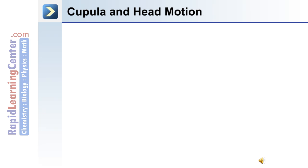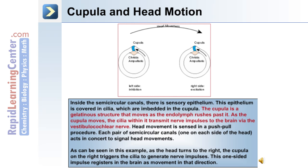Inside the semicircular canals there is sensory epithelium covered in cilia, which are embedded in the cupula. The cupula is a gelatinous structure that moves as endolymph rushes past it. As the cupula moves, the cilia within it transmit nerve impulses to the brain via the vestibulocochlear nerve. Head movement is sensed in a push-pull procedure: each pair of semicircular canals, one on either side of the head, acts in concert to signal head movements. As the head turns to the right, the cupula on the right triggers the cilia to generate nerve impulses.